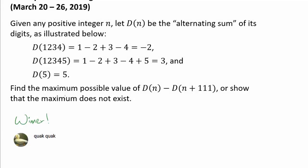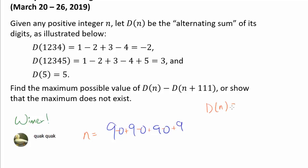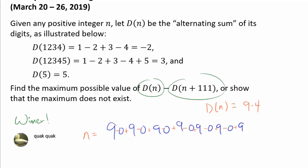At first glance, you may conjecture that the maximum may not exist because d of n can be made as large as we want. For example, consider a number like 90909 — we can attach more 09s if we want. If we think of this as n, then d of n gives us 9 minus 0 plus 9 minus 0 plus 9, which is 9 times the number of 9s. We can keep attaching 09s to make d of n as large as we want, showing the maximum of d of n alone does not exist. But that's not the question — we are looking at the difference between d of n and d of n plus 111.